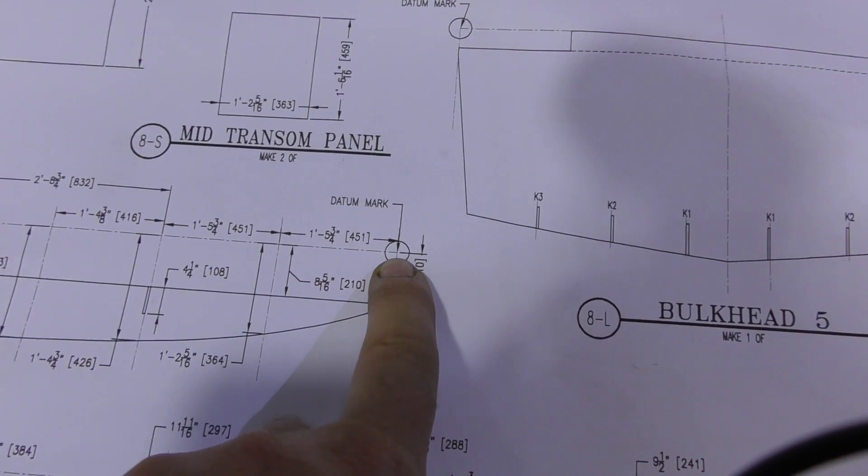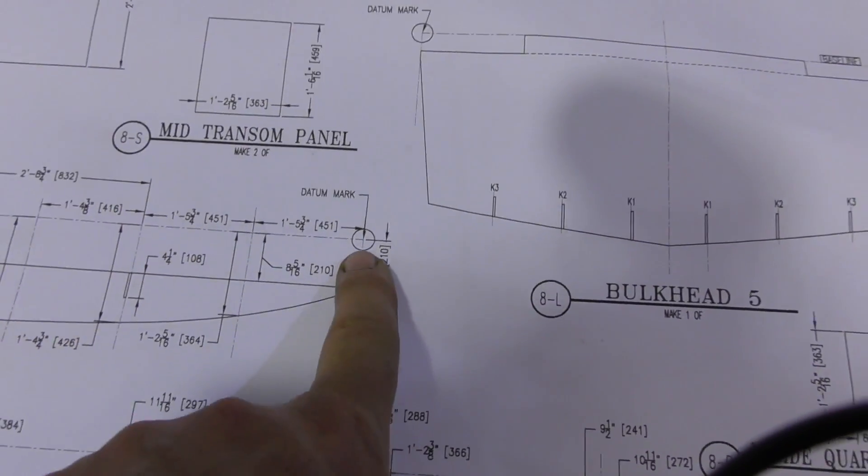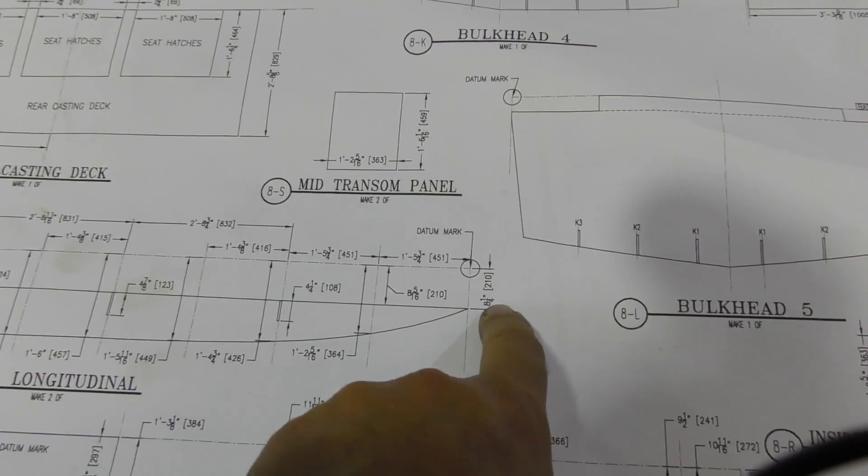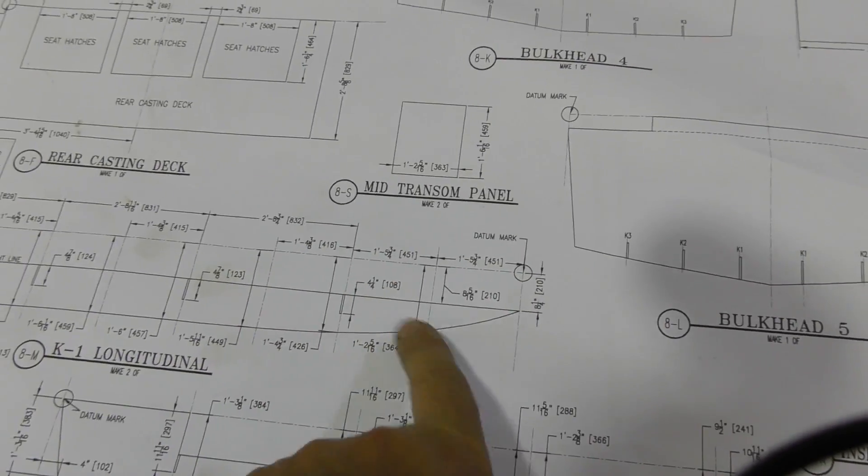You can see here this corner's our datum point for all these measurements, so I'm going to start with that as the corner over there and then we're going to measure, we've got measurements down, measurements across, pretty straightforward.